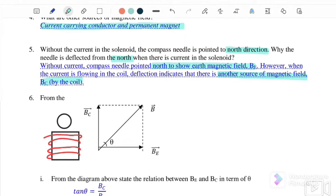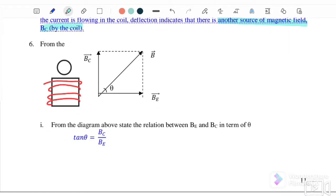It will be deflected. For example, let's say initially our needle is pointing to the north—this is north. It points to the north and this one we call the magnetic field of the Earth, B_E. When we turn on the power supply and when the current is flowing through the solenoid.